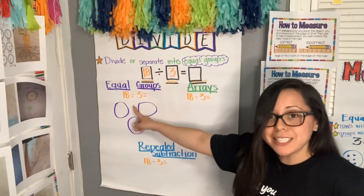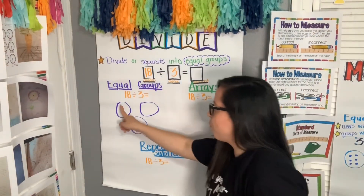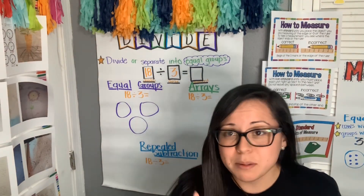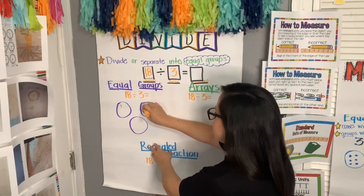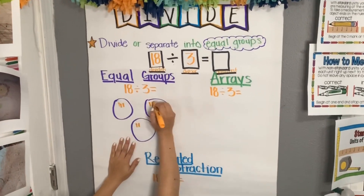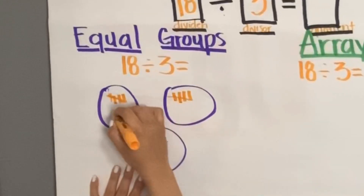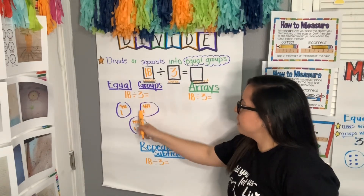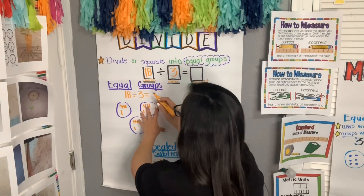I have three groups and I need to divide 18 into them. I'm going to start counting while placing one in each group until I get to 18. Here we go: 1, 2, 3, 4, 5, 6, 7, 8, 9, 10, 11, 12, 13, 14, 15, 16, 17, 18. I divided 18 into three equal groups. How many are in each group? Six. So my quotient is six.